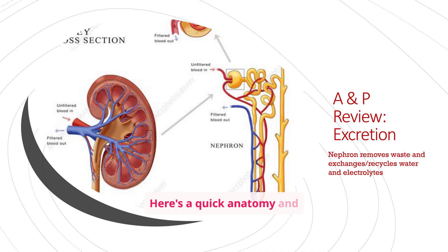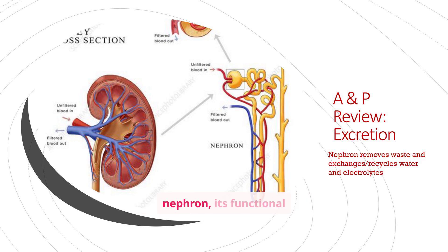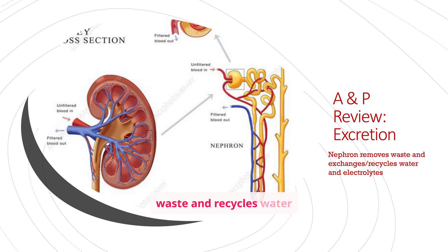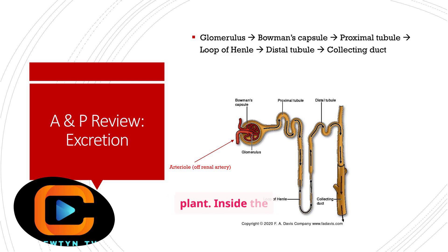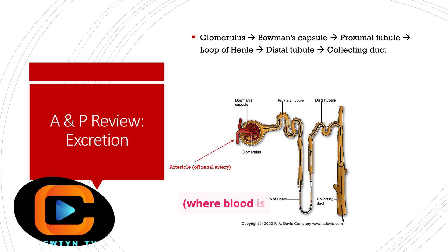Here's a quick anatomy and physiology review. This image shows the structure of the kidney and the nephron, its functional unit. Unfiltered blood enters and the nephron removes waste and recycles water and electrolytes, ultimately producing urine. Let's trace the path of fluid through the nephron. Imagine your kidneys as a highly efficient filtration plant. Inside the kidney, the nephron is the star player. The process starts at the glomerulus, where blood is filtered, and flows into Bowman's capsule.